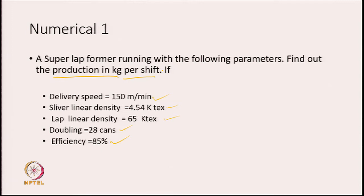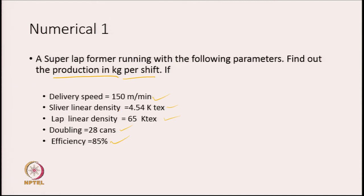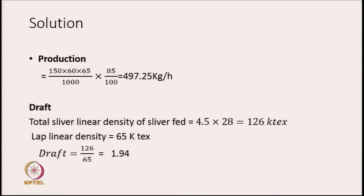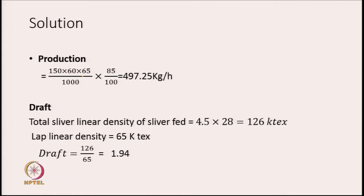Sometimes a shift is considered to be 7.5 hours because a 30 minute recess is given, so we can multiply by 7.5 hours. The calculation is very simple: 150 is the delivery speed, so delivery speed multiplied by 60 gives it per hour. Then multiplied by the kilotex value of the sliver which is 65, we get it in grams. We divide by 1000 to make it in kg, then multiply by the efficiency factor, and we get production of 497.25 kg per hour.